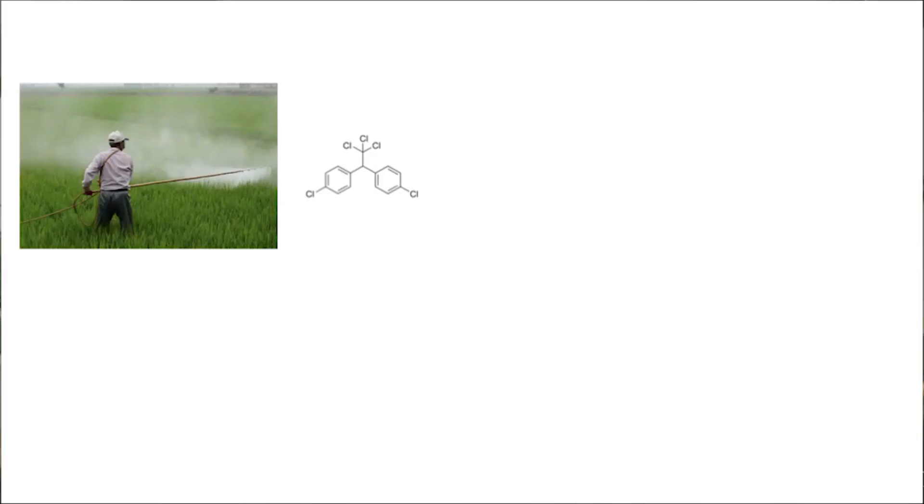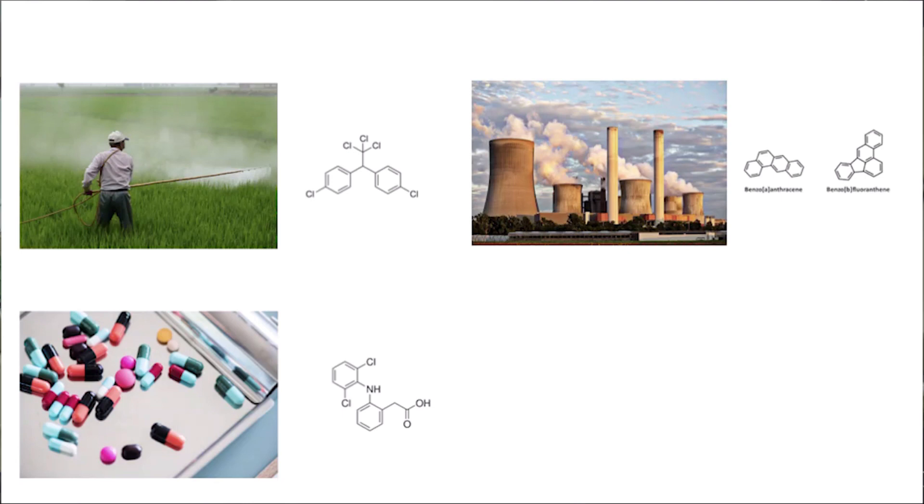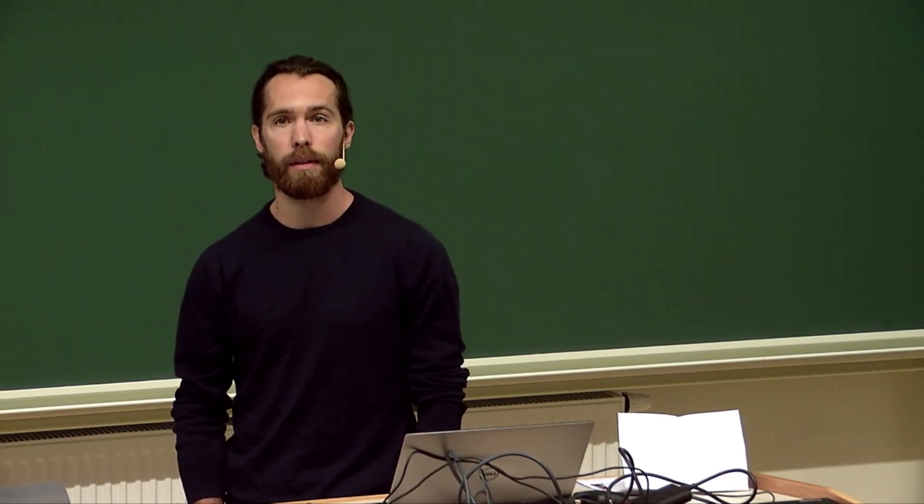So, pesticides and herbicides, pharmaceuticals, polycyclic aromatic hydrocarbons and perfluorinated substances. These are all examples of micro pollutants in our environment.